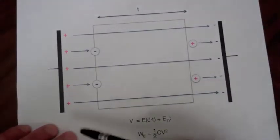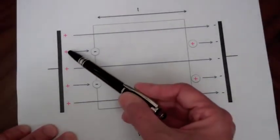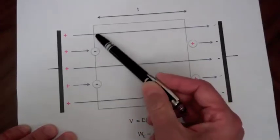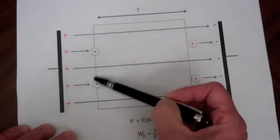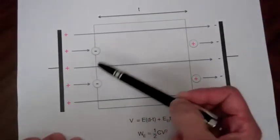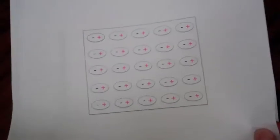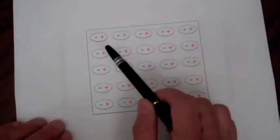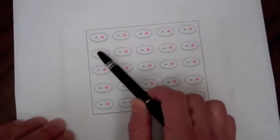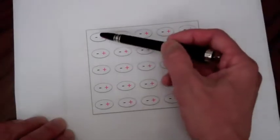But some of those field lines from the positive plate will terminate on this, what we'll call fixed negative charge on this face. We say it's fixed negative charge because that electron cloud can only move a little bit. Those electrons aren't free to move in this dielectric.